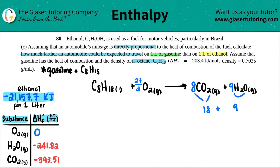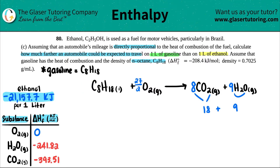You could multiply the whole equation by 2 to eliminate the fraction, but since we need the combustion enthalpy per one mole of C8H18, we'll leave it as is. That avoids an extra step, and the numbers will be exactly the same.